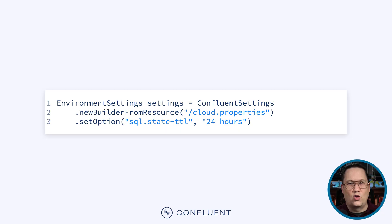One way to control the state is to set the state time-to-live for the Flink environment. This configuration will cause Flink to delete the dormant state after a specified period, which can reduce resource usage for the job. However, if an event shows up outside of the time window, the state may have been deleted, which could cause inconsistencies if your application requires that data.